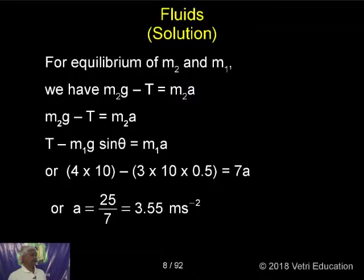From this equation a can be calculated. T cancels, or T is taken out. Then (m₂ - m₁ sin theta) times g equals (m₁ + m₂) times a. Therefore a equals (m₂ - m₁ sin theta) divided by (m₁ + m₂) times g.